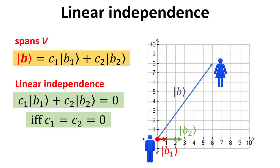Does this mean we can arbitrarily choose any two vectors b1 and b2 to be our basis vectors to represent b-ket? The quick answer is no. To be qualified basis vectors, these basis vectors must span the R2 vector space. In other words, we can obtain any vector b-ket by linear combinations of the basis b1 and b2, as shown in the yellow box.